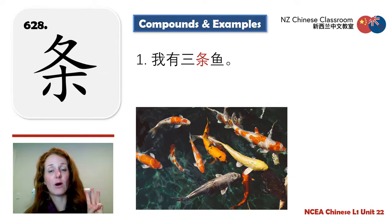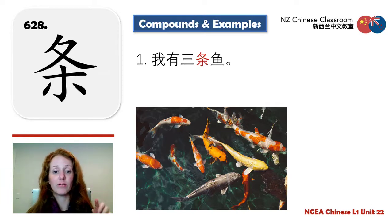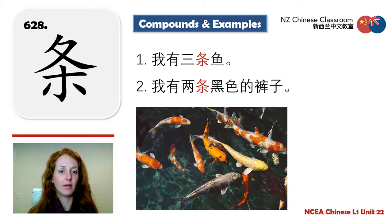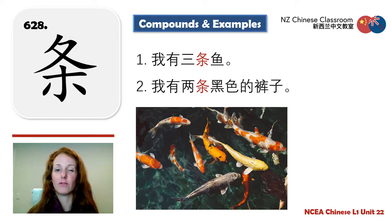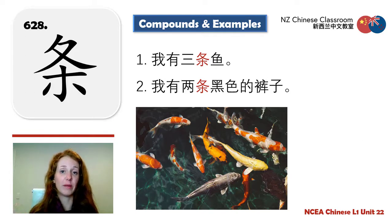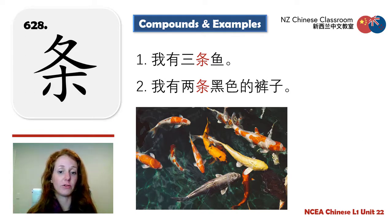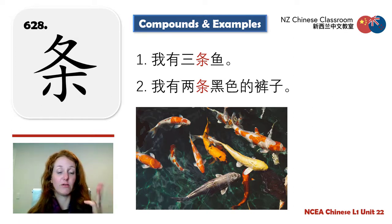条 — a measure word for long, skinny things. Fish are long and skinny. Other examples: a pair of black trousers, arms, legs, snakes — all use 条 as the measure word.